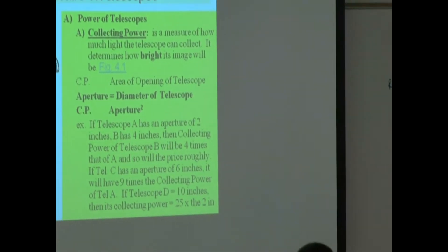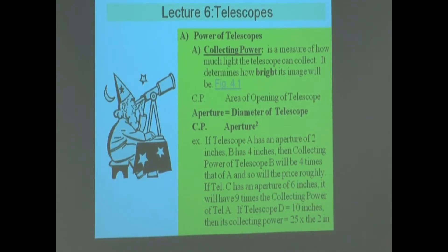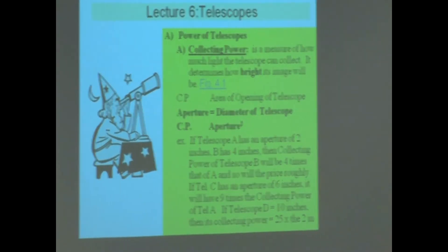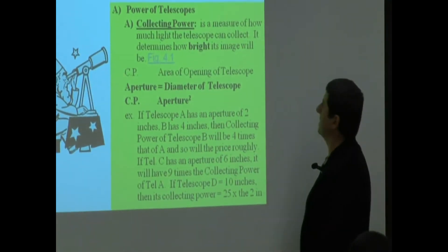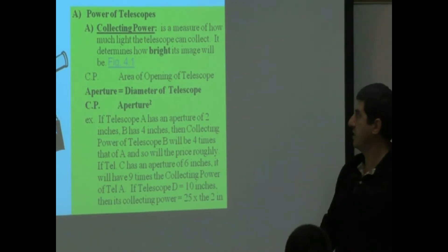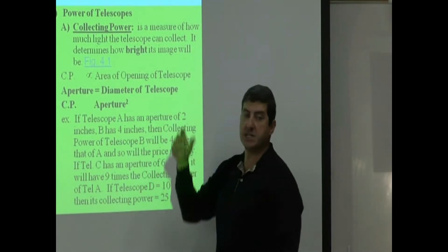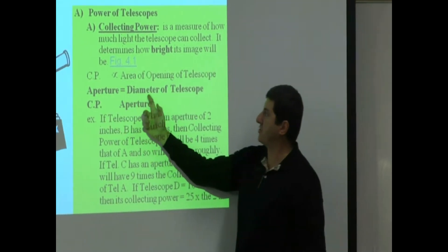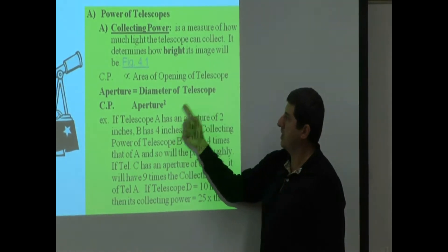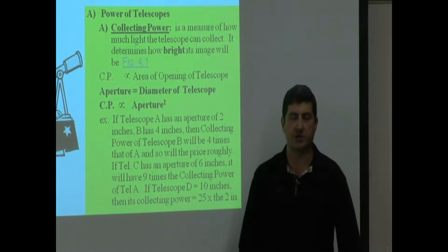The collecting power of a telescope is a measure of how much light the telescope can collect. It determines how bright the image that you're going to be seeing. The collecting power is proportional to the area of the opening of the telescope — how big the opening is. The aperture equals the diameter of the telescope, therefore the collecting power is proportional to aperture squared.